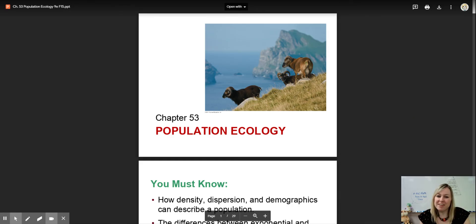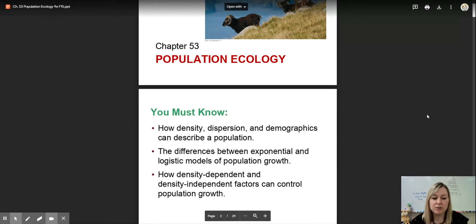Hello, now we're at Chapter 53. This one is populations, population ecology. Your must-knows for this one are these three Ds: density, dispersion, and demographics.